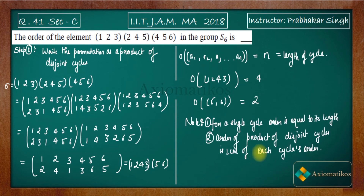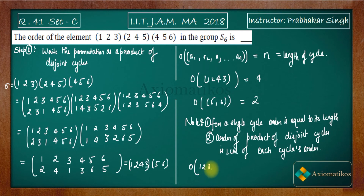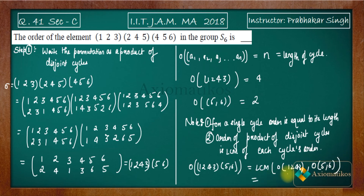To find the order of the product (1 2 4 3)(5 6), we take LCM of the orders of each disjoint cycle. The order of (1 2 4 3) is four and the order of (5 6) is two. LCM of four and two is four. So the answer to this problem is four.